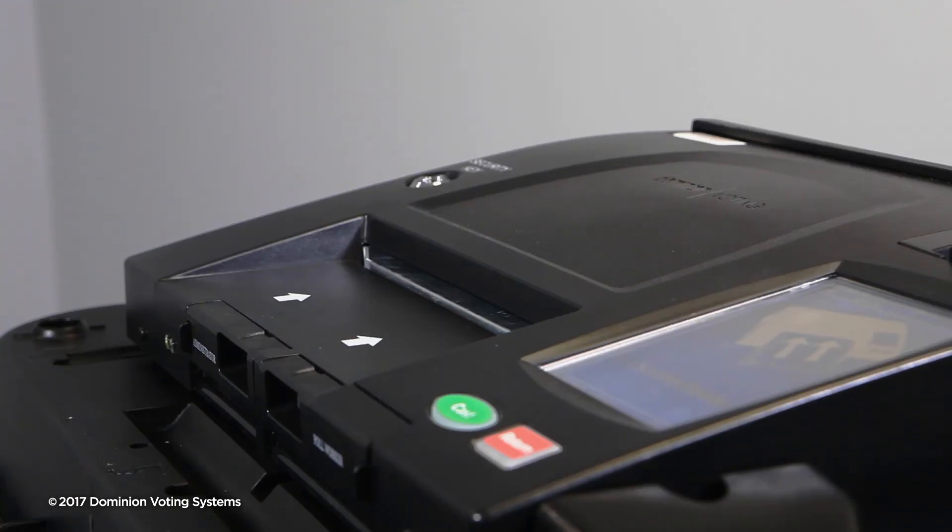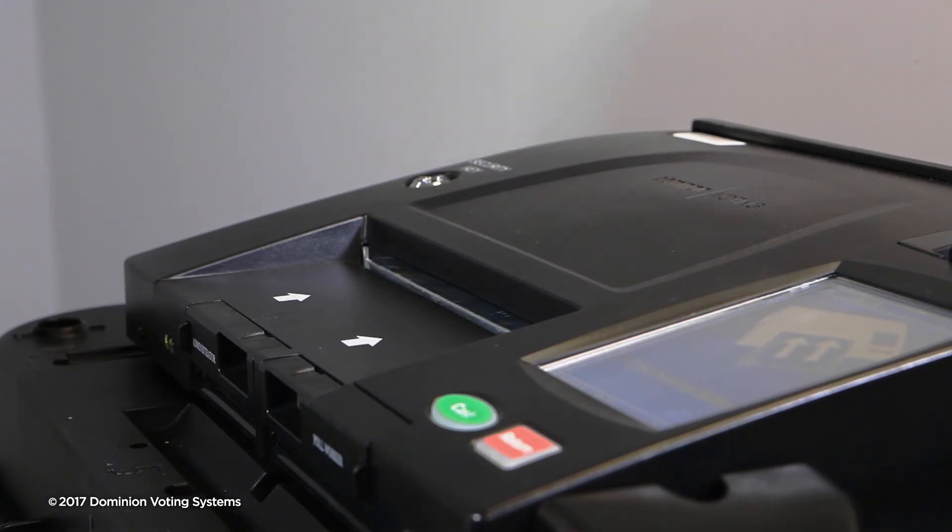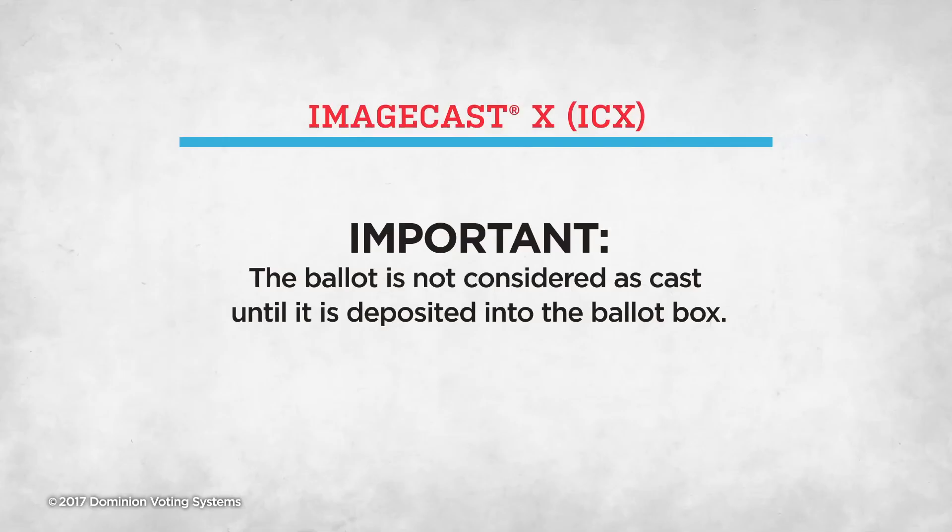If using a secrecy sleeve, the voter will cast their ballot by feeding the ballot through the secrecy sleeve. The ballot is not considered as cast until it is deposited into the ballot box.